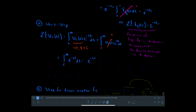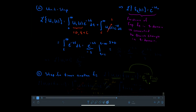Performing that integral, I get e^{-st} over negative s, evaluated from t = c to t = infinity. At the upper bound, choosing s greater than 0 ensures e^{-st} decays to 0 as t goes to infinity. Then I get minus e^{-sc} over negative s, which gives e^{-sc}/s once I cancel the negatives — so long as s is greater than 0.